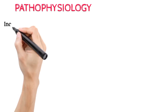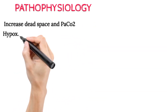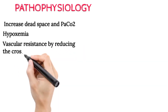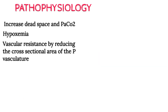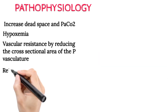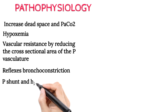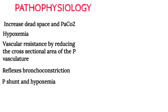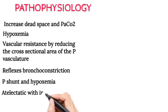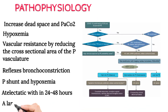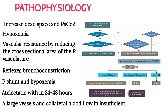Pathophysiology: Embolic occlusion in the pulmonary circulation increases dead space and increases PACO2, resulting in hypoxemia. Increased pulmonary vascular resistance reduces the cross-sectional area of the pulmonary vasculature, causing reflex and humoral vasoconstriction. Reflex bronchoconstriction further increases areas with low V/Q ratio, leading to increased pulmonary shunt and hypoxemia. The affected area loses surfactant within hours and may become atelectatic within 24 to 48 hours. Pulmonary infarction occurs when the embolus involves large vessels and collateral blood flow is insufficient.